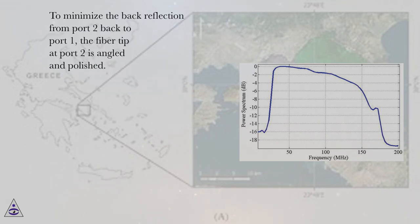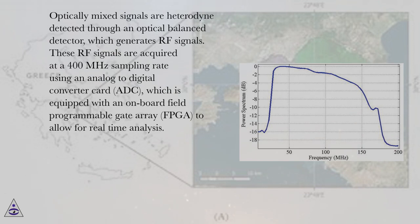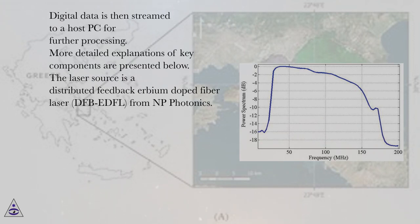To minimize back reflection from port 2 back to port 1, the fiber tip at port 2 is angled and polished. Laser pulses are transmitted into the atmosphere and aerosol particles scatter the laser signals back into the lens, which in turn are transmitted from the optical circulator's port 2 to port 3. Back-scattered and local oscillator signals are optically mixed using an optical coupler, then heterodyne detected through an optical balance detector, which generates RF signals. These RF signals are acquired at a 400 MHz sampling rate using an analog-to-digital converter (ADC) equipped with an onboard field-programmable gate array (FPGA) for real-time analysis. Digital data is then streamed to a host PC for further processing.